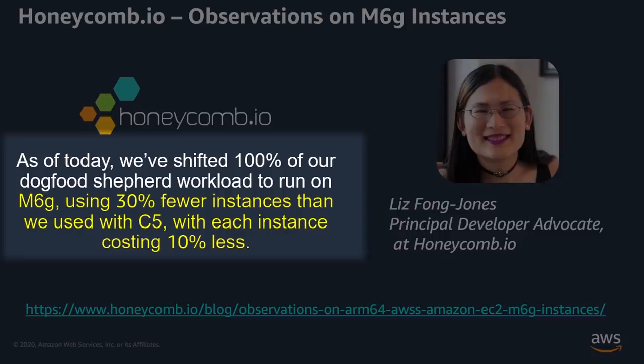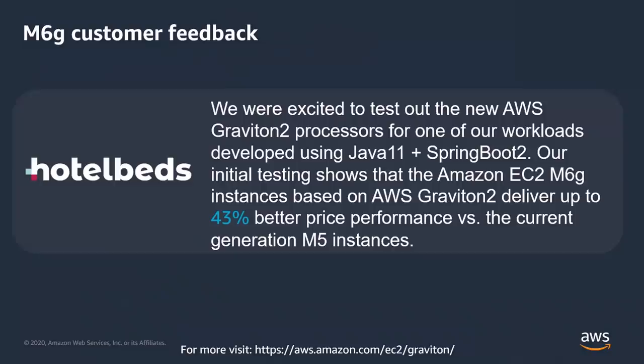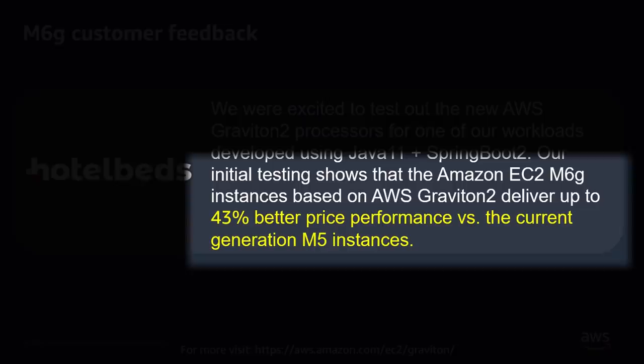They found that M6G reduced their instance counts by 30% and at the same time reduced the cost per instance by 10%, giving them an all-in savings of 40% in just 15 hours of development work. Hotelbeds, the world's leading bed bank, saw 43% better price performance for their Java 11 workloads. Many other companies, including one of my personal favorites SmugMug, are also moving to M6G at scale.